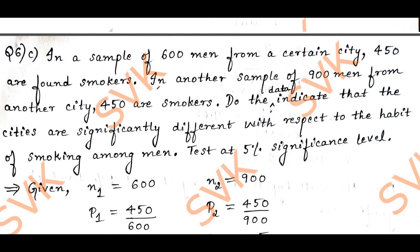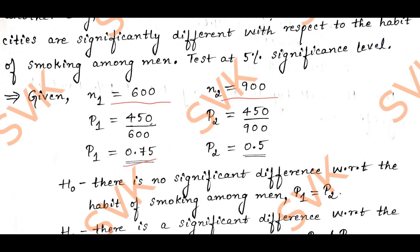The given problem is of samples of two proportions. The first sample n1 equals 600 and the second sample n2 equals 900. The sample proportions p1 and p2 are calculated: p1 equals 450 divided by 600, and p2 equals 450 divided by 900, giving p2 equal to 0.5.